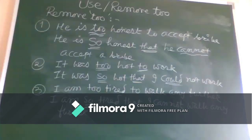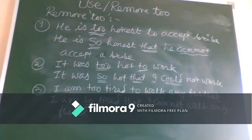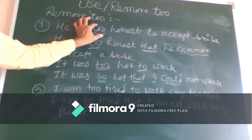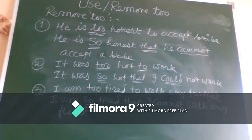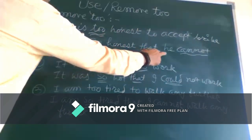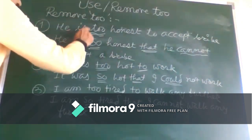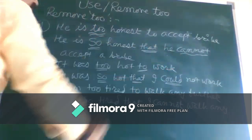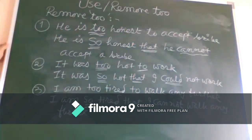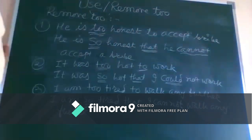Now we are going to see certain sentences. First sentence: 'He is too honest to accept a bribe.' Here you have an adverb 'too,' and by rule number one, we replace it with 'so that': 'He is so honest that he cannot accept a bribe.' If the sentence is in present tense, we use 'cannot'; if past tense, we use 'could not.' Since the original sentence with 'too' is positive, the 'so that' sentence becomes negative, as per rule number two.